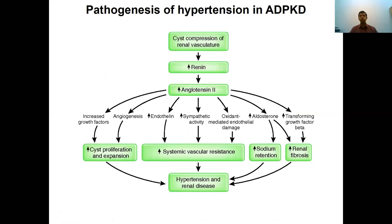How do these patients develop hypertension? There are many theories, but one main mechanism is that the cysts cause compression on the renal vasculature and renal structure, which causes more renin, angiotensin II, and aldosterone secretion and stimulation. This whole pathway gets stimulated, resulting in hypertension. It then becomes a vicious cycle where hypertension damages the kidney more and more.